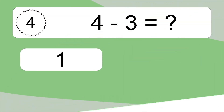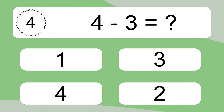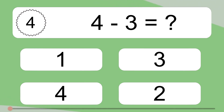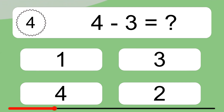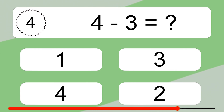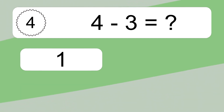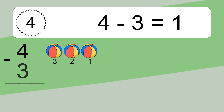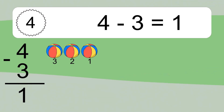4 minus 3 equals what? 4 minus 3 equals 1. Let's count it: 3, 2.